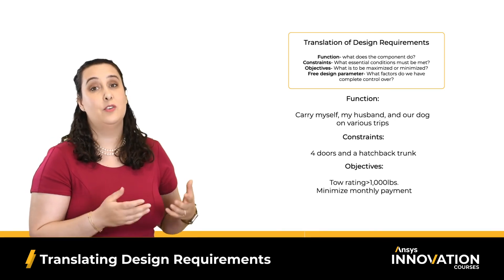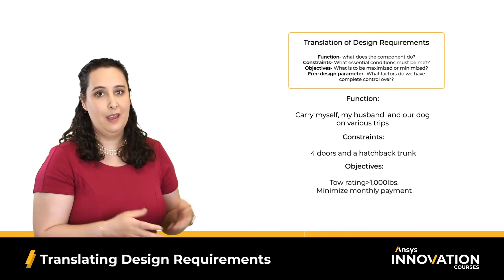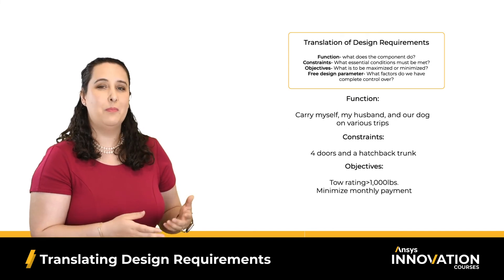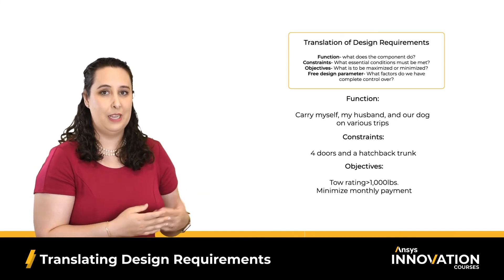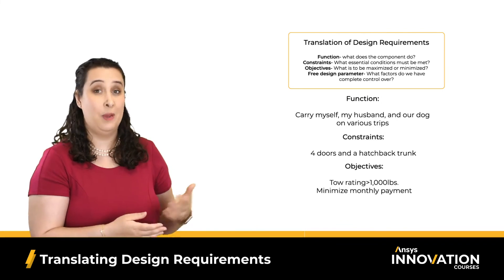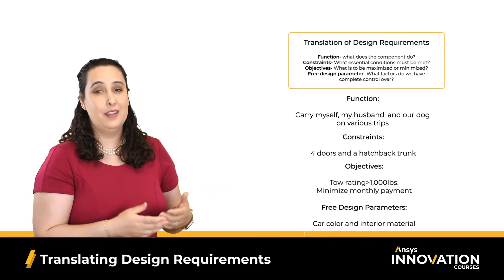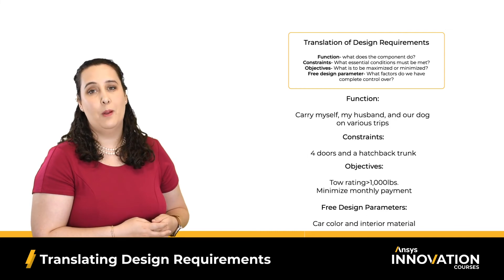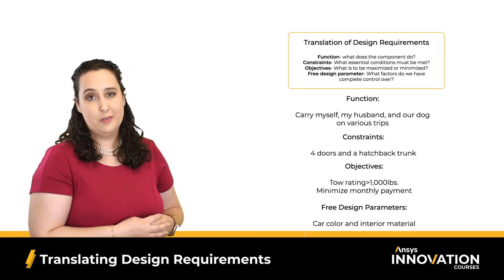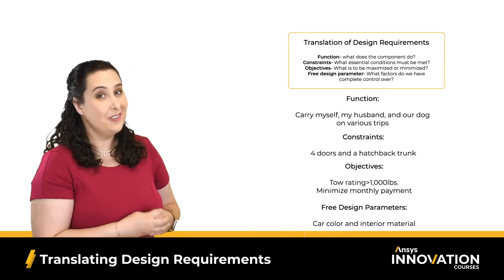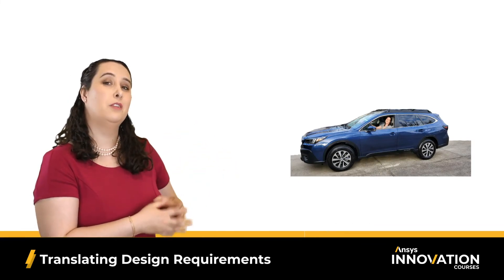My second objective is trying to minimize my monthly car payment. When doing my research, I actually found that these two objectives contradicted one another — in general, the more money I was willing to spend, the higher the tow rating I got. And finally, my free design parameters were car color and interior material.